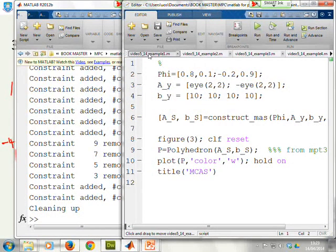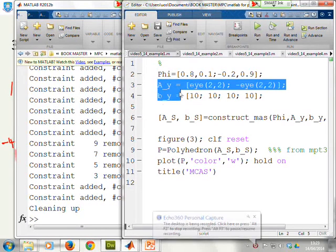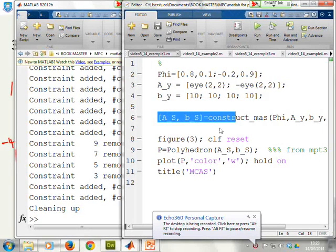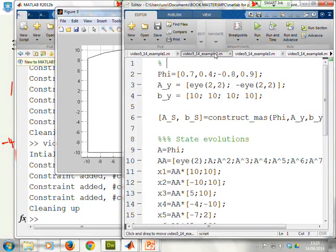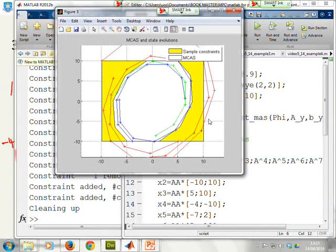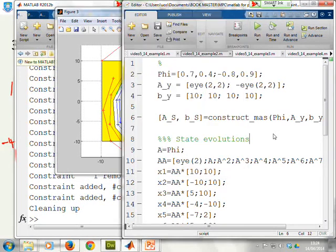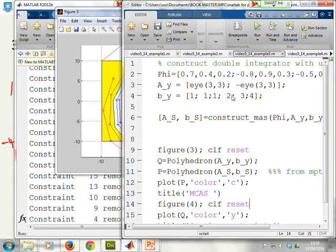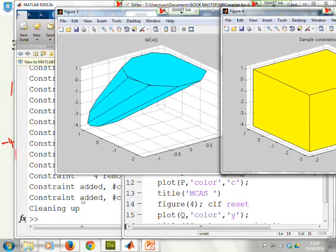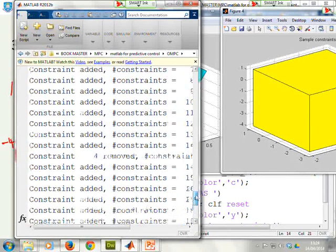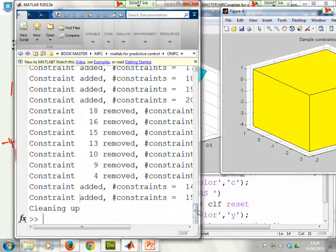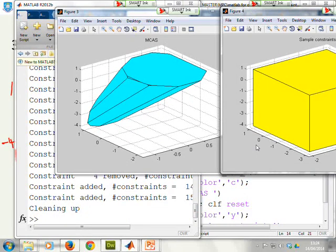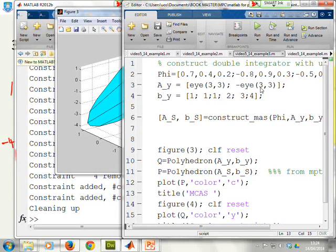For example, video 5.14 example 1, you'll see simple state transition, simple sample constraints, straight into construct MAS and then a plot. So I can run that and there it is, nice and simple. You can test it yourself. Example 2, very similar, I can run it and it generates the plot in seconds. If you want to change the numbers and see what's going on, you can do it yourself. Video 5.14 again took a little bit longer. You can see lots of messages from construct MAS telling you which constraints it's adding, maybe which ones it's removing, until it converges. Then it generates these two plots. You can play around with this code if you want and do your own examples.